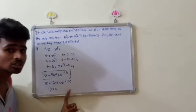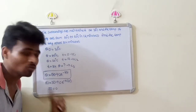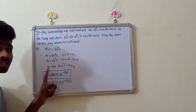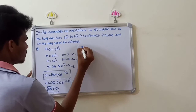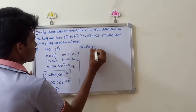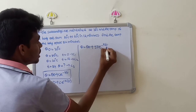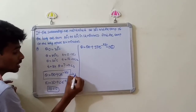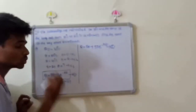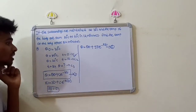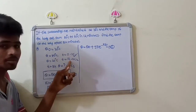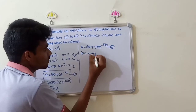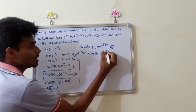Applying Case 1 at T = 0: e power minus k into 0 equals e power 0, which equals 1. Substituting theta_0 = 80 and theta_s = 30, we get C = 80 minus 30 = 50.